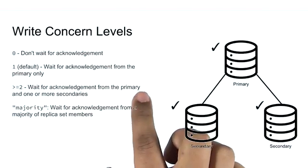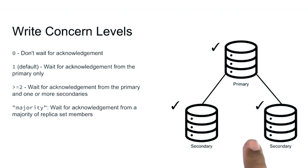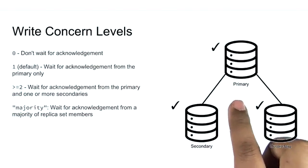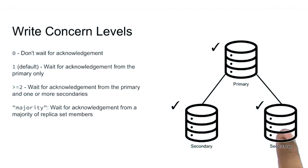Write concerns greater than one increase the number of acknowledgements to include one or more secondary members. Higher levels of write concern correspond to a stronger guarantee of write durability. For example, I can set a write concern of three to require acknowledgement from all three replica set members.